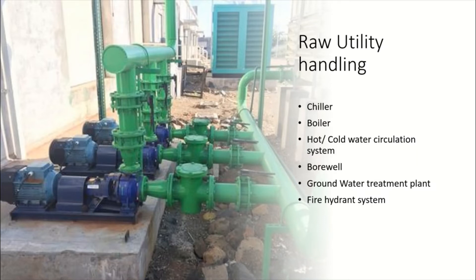These raw utilities are related to the performance of your plant, facility, or machine. A few critical raw utilities include chillers, boilers, hot water and cold water circulation systems, bore wells, storage tanks for water supply, groundwater treatment systems, and fire hydrant systems. These are the basic raw utilities.